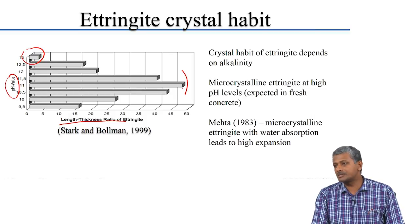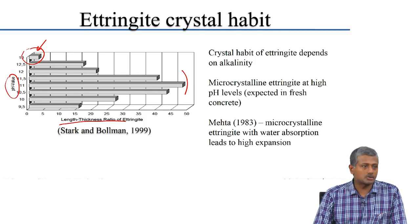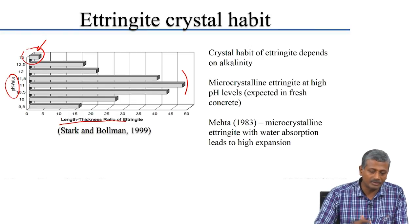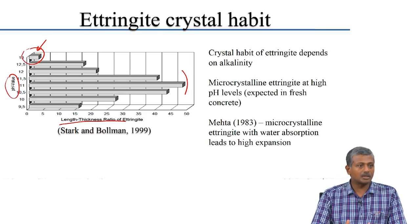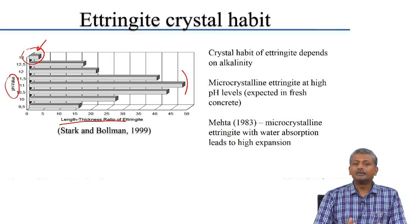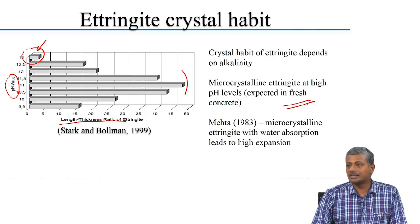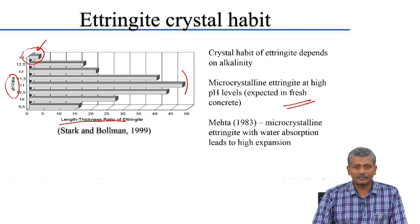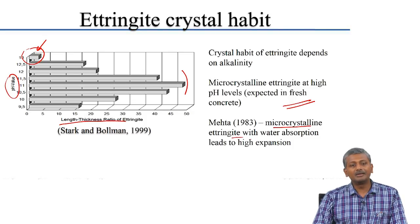In the early stages of cement hydration, microcrystalline ettringite forms where the length-to-thickness ratio is quite small. But when external sulphate attack occurs and ettringite expands by imbibing moisture, it may start exhibiting a crystal habit with higher length. Microcrystalline ettringite at high pH levels is seen in fresh concrete during early hydration. According to researchers, microcrystalline ettringite with water absorption capability leads to high expansions, and this generally happens when pH conditions are fairly high.